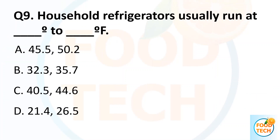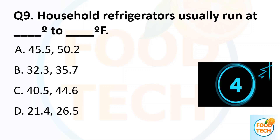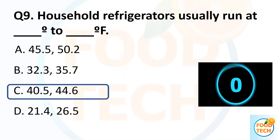Question 9. Household refrigerators usually run at dash to dash Fahrenheit. A. 45.5 to 50.2. B. 32.3 to 35.7. C. 40.5 to 44.6. D. 21.4 to 66.5. Answer C. 40.5 to 44.6.